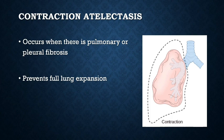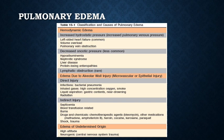Contraction atelectasis occurs when focal or generalized pulmonary or pleural fibrosis prevents full lung expansion. Now we will discuss pulmonary edema. Edema is the accumulation of fluid within tissues. Pulmonary edema can have many causes — an example is increased hydrostatic pressure, which is common in left-sided heart failure, or decreased oncotic pressure such as in nephrotic syndrome. Pulmonary edema can also be due to infections, inhalation injury, and even high altitude.